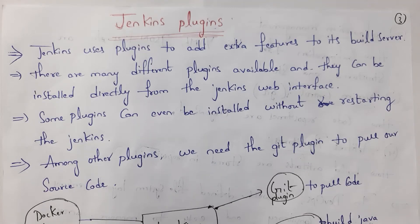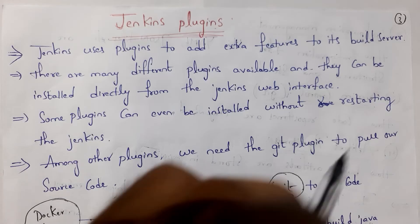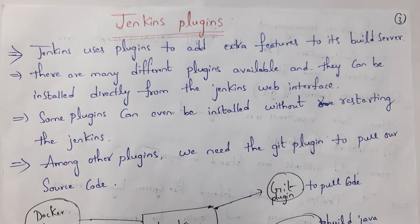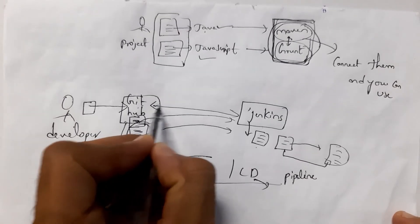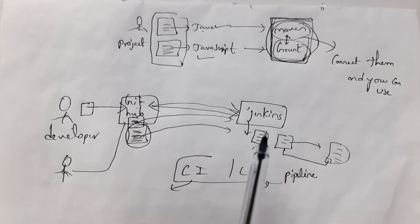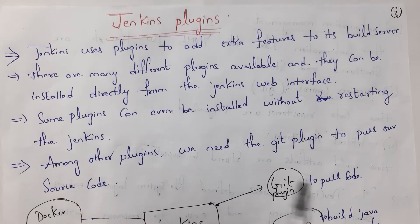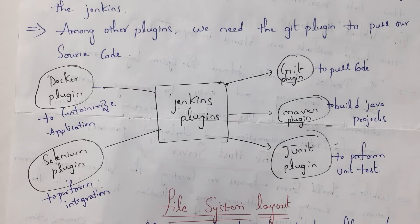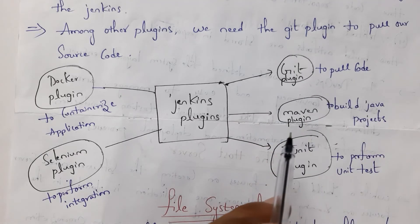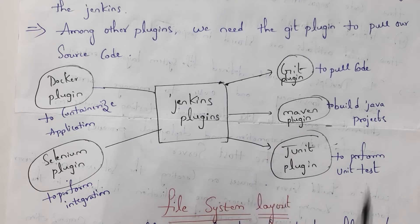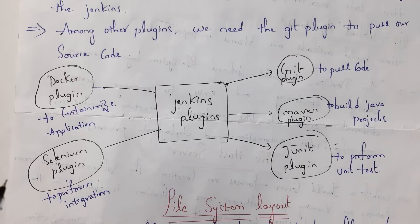The next topic is Jenkins plugins. There are many plugins you can install in Jenkins. You can open the Jenkins website and install plugins directly, and some plugins can be installed without restarting Jenkins. One popular plugin is the Git plugin, which allows Jenkins to automatically pull code from Git and perform operations like compiling and testing. Other popular plugins include: the Maven plugin for building Java projects, the JUnit plugin for unit testing, the Selenium plugin for integration testing, and the Docker plugin for placing your application in containers.